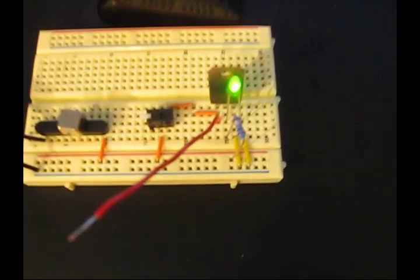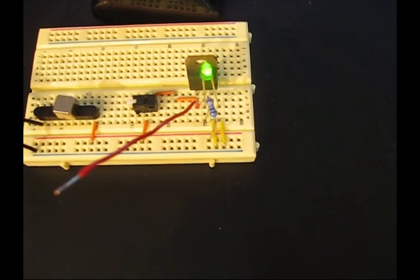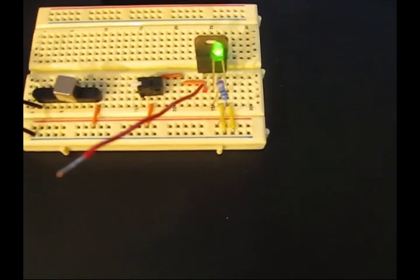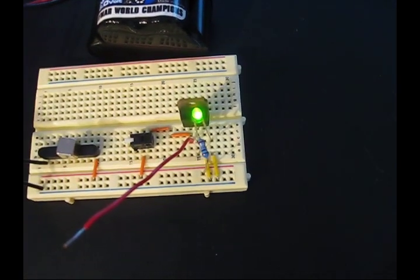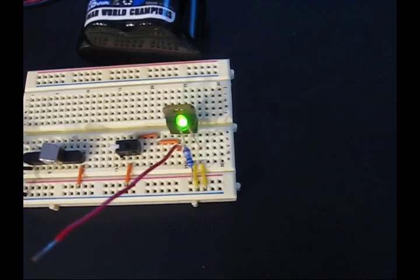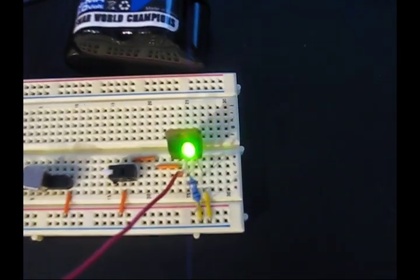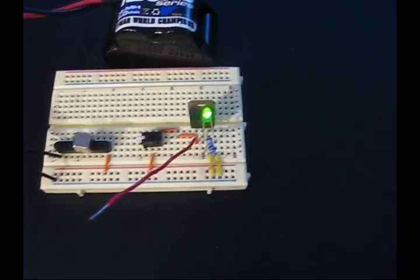Now what this means is the voltage to the base of the NPN transistor is unknown. It could be 5 volts, it could be 0 volts. But right now we can tell that it's below the activation voltage for the NPN transistor since the green LED is on.